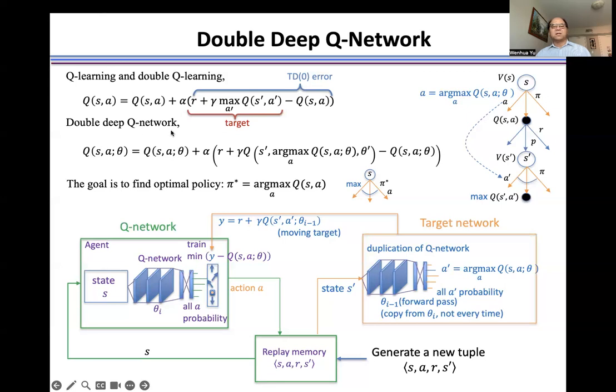Double deep Q-network is based on the double Q-learning method. Here, this is a standard double deep Q-network update equation. We have two networks: one is theta as the network parameters, another is theta prime as another network. Right now, we're not equally updating both networks.